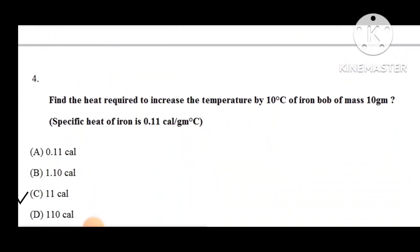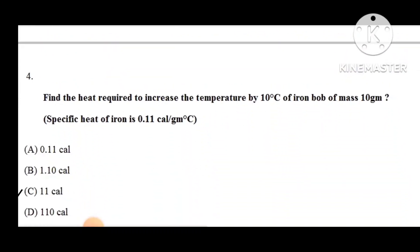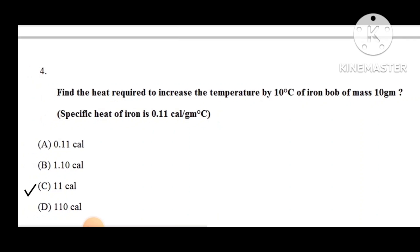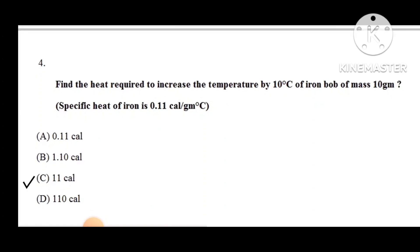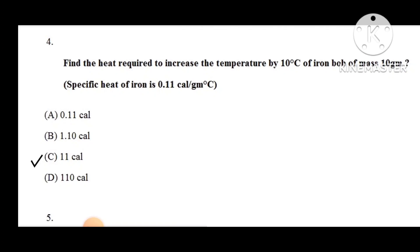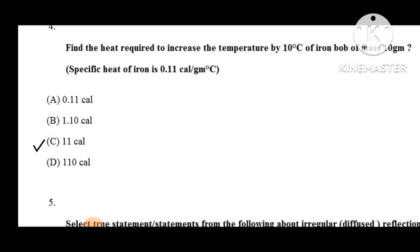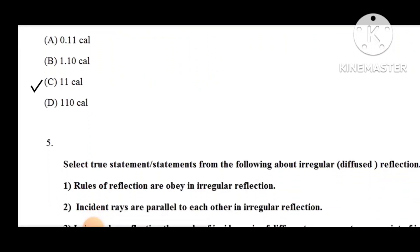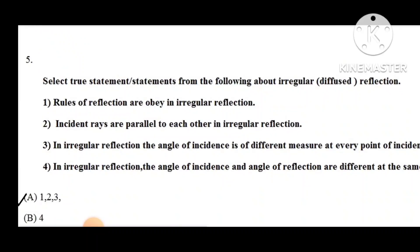Question number 4: Find the heat required to increase temperature by 100 degrees Celsius of an iron block of mass 10 grams. Specific heat of iron equals 0.11 calorie per gram degree Celsius. Options: A) 0.11, B) 0.10, C) 11 calories, D) 110 calories. The correct option is C — 11 calories.